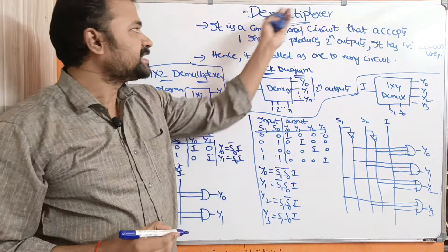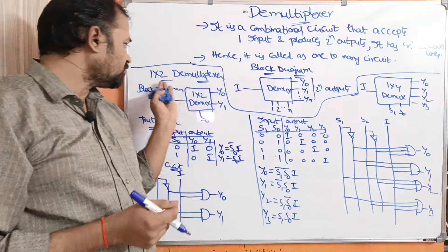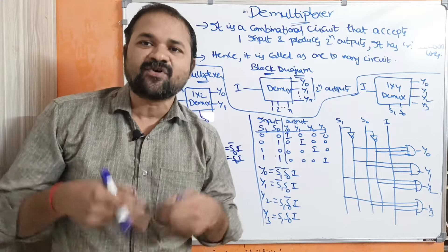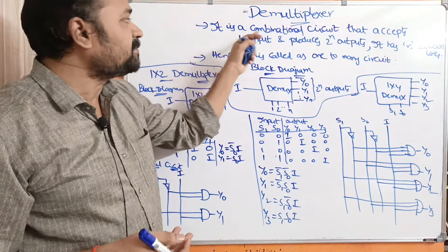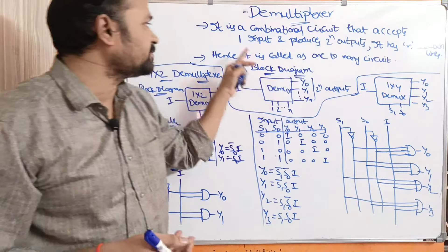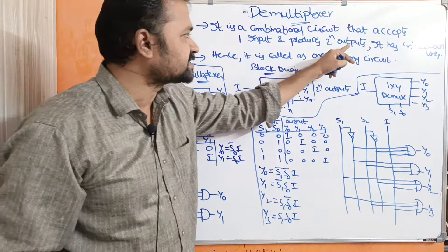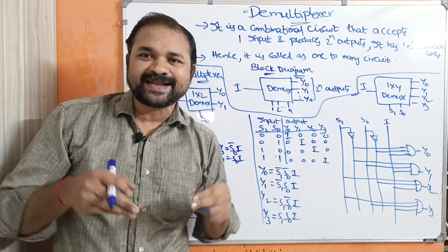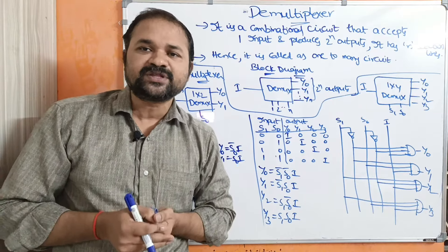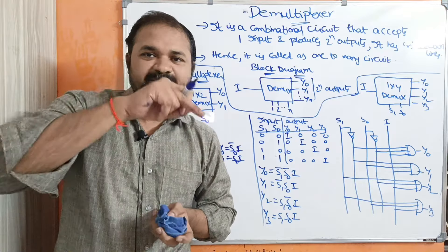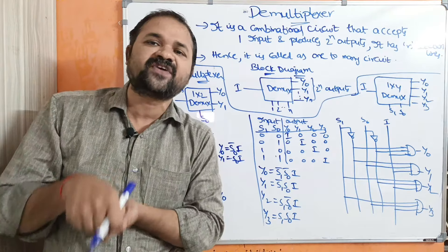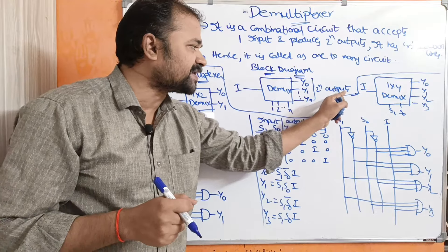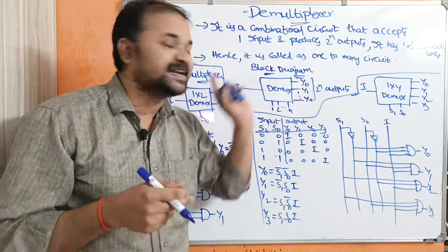Let us discuss about introduction to demultiplexors, 1×2 demultiplexor, and 1×4 demultiplexor. A demultiplexor is a combinational circuit that accepts one input and produces 2^n outputs. It has n selection lines. Demultiplexor is entirely opposite to the multiplexor. A multiplexor accepts 2^n inputs and produces one output, whereas a demultiplexor accepts only one input and produces 2^n outputs.